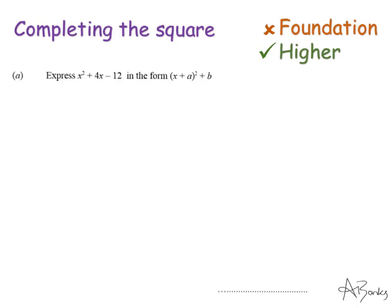We use completing the square when we don't have a calculator and when we can't factorise. For example, this expression x squared plus 4x minus 12, we can't factorise it. There are no two numbers that multiply to give minus 12 and add to give positive 4, so we need to complete the square instead.